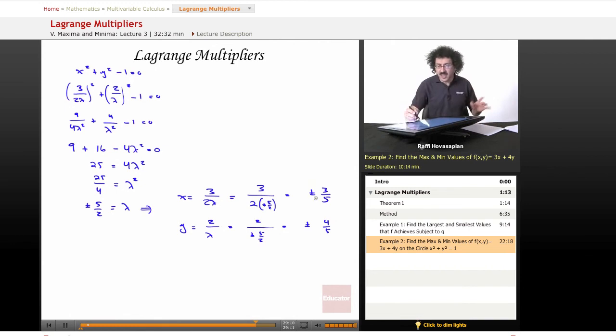Let's stop and think about this. We have plus and minus 3 fifths for x, and plus and minus 4 fifths for y. You're probably thinking, just like the previous problem, that we have four points: 3 fifths, 4 fifths; 3 fifths, negative 4 fifths; negative 3 fifths, 4 fifths; negative 3 fifths, negative 4 fifths. That's actually not the case. And this is where you have to look at other things. There's other analyses going on here. x equals 3 over 2 lambda, y equals 2 over lambda. x and y have the same sign. So they're either both positive or they're both negative. So we don't have four points to pick. We only have two points to pick - one in the first quadrant, one in the third quadrant.